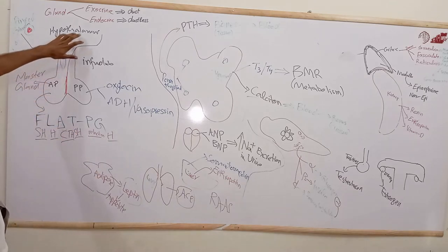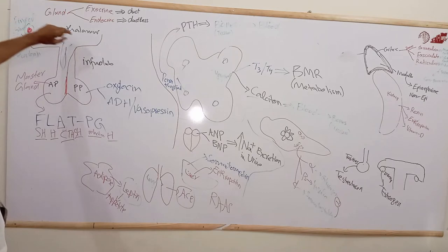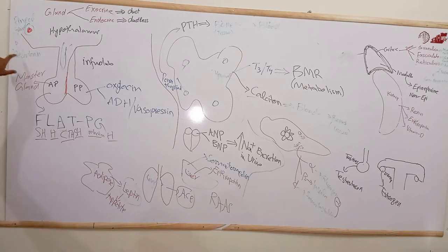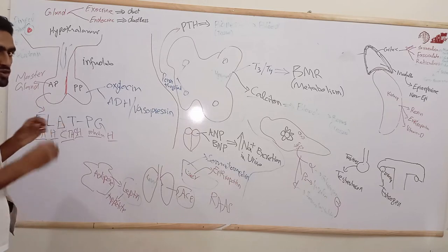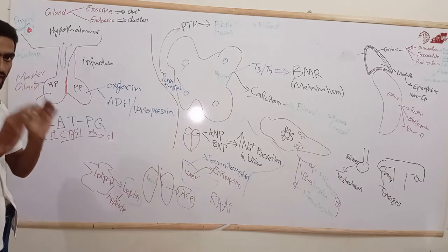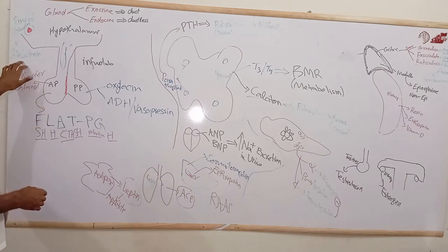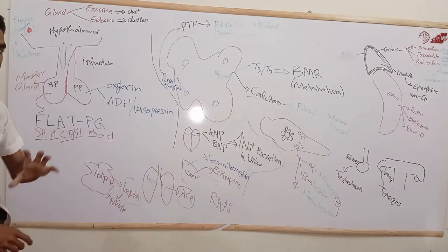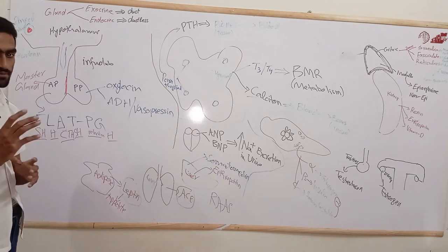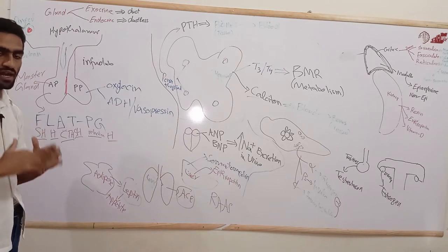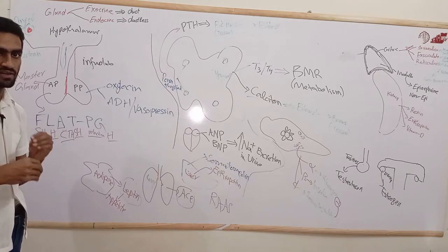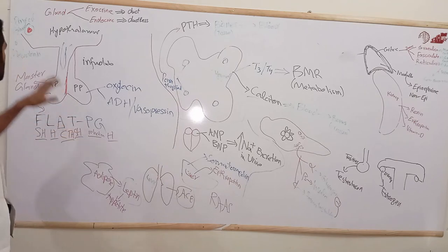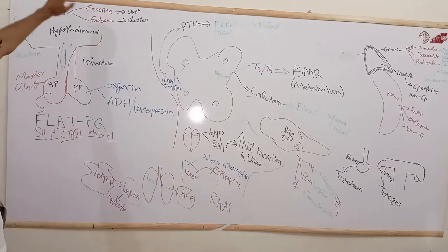Another gland related to the brain is the pineal gland, which secretes melatonin. Melatonin maintains the day-night cycle — its secretion is high at night and decreases in light. It also suppresses the male gonadal characteristics until puberty.